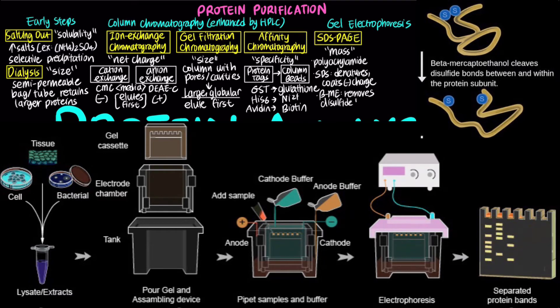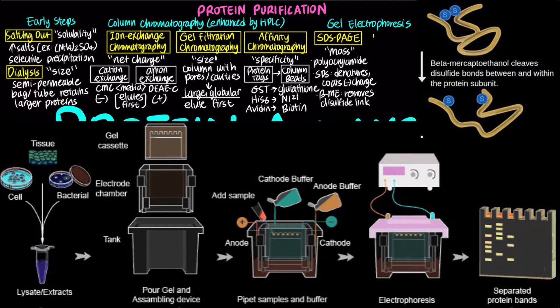Isoelectric focusing separates proteins based on isoelectric point, also known as pI, which is the pH in which a protein's overall charge is neutral. A pH gradient is established by a mixture of organic acids and bases, and each protein migrates until it reaches the pH that matches its pI.